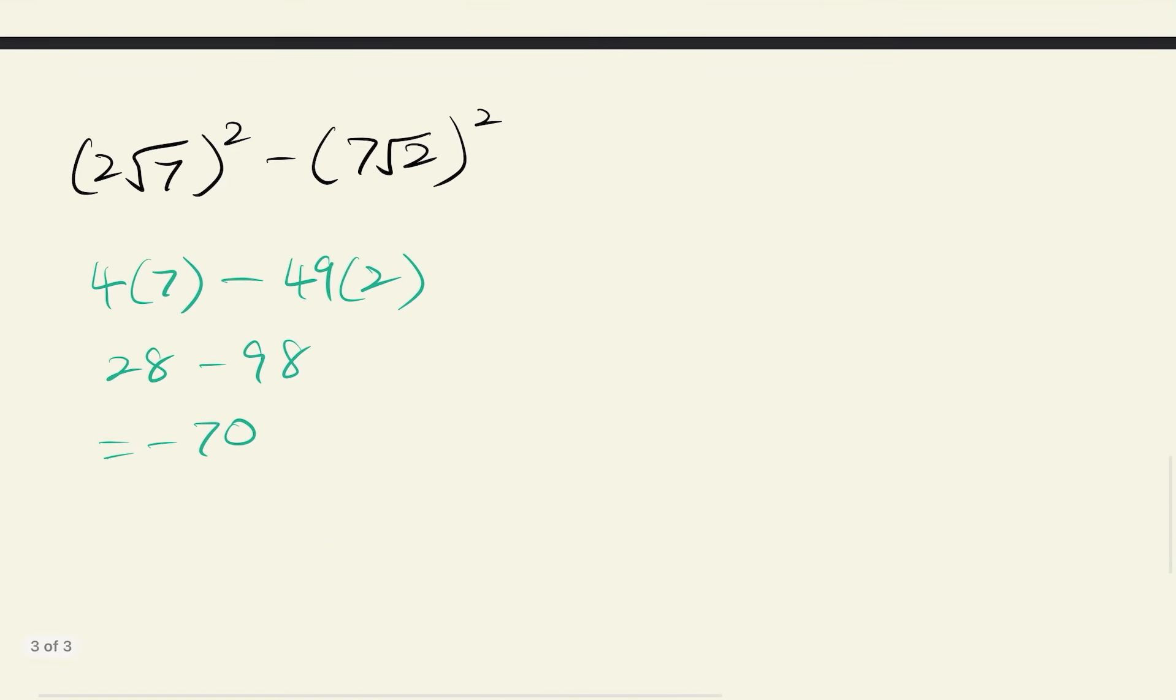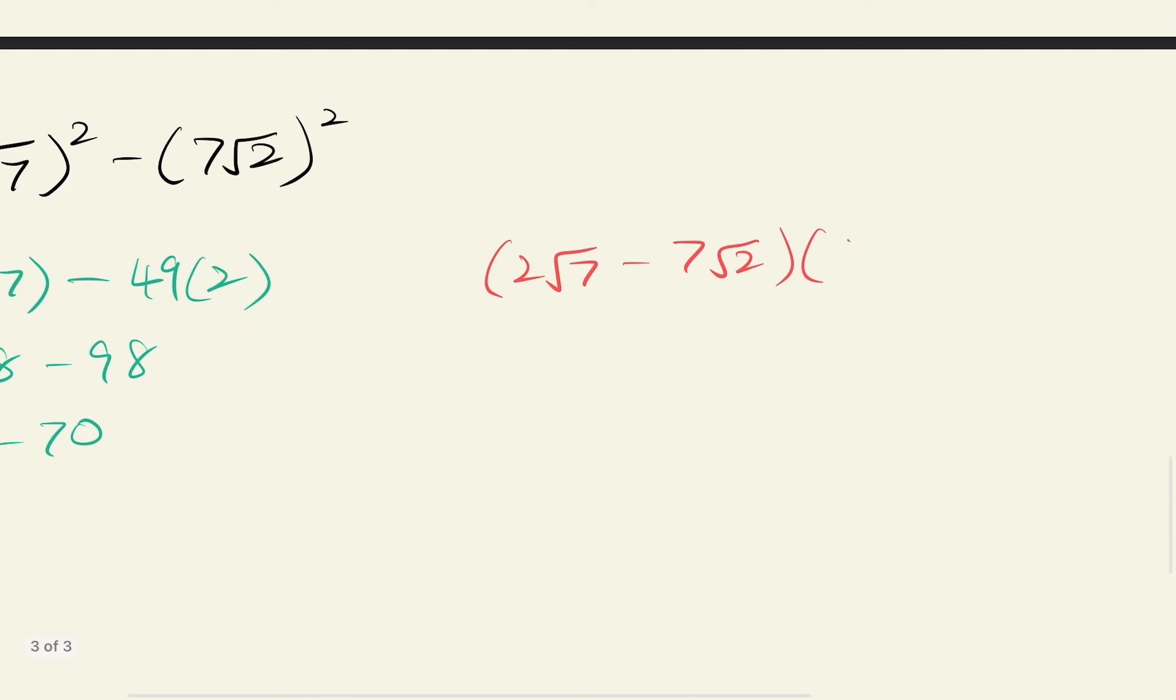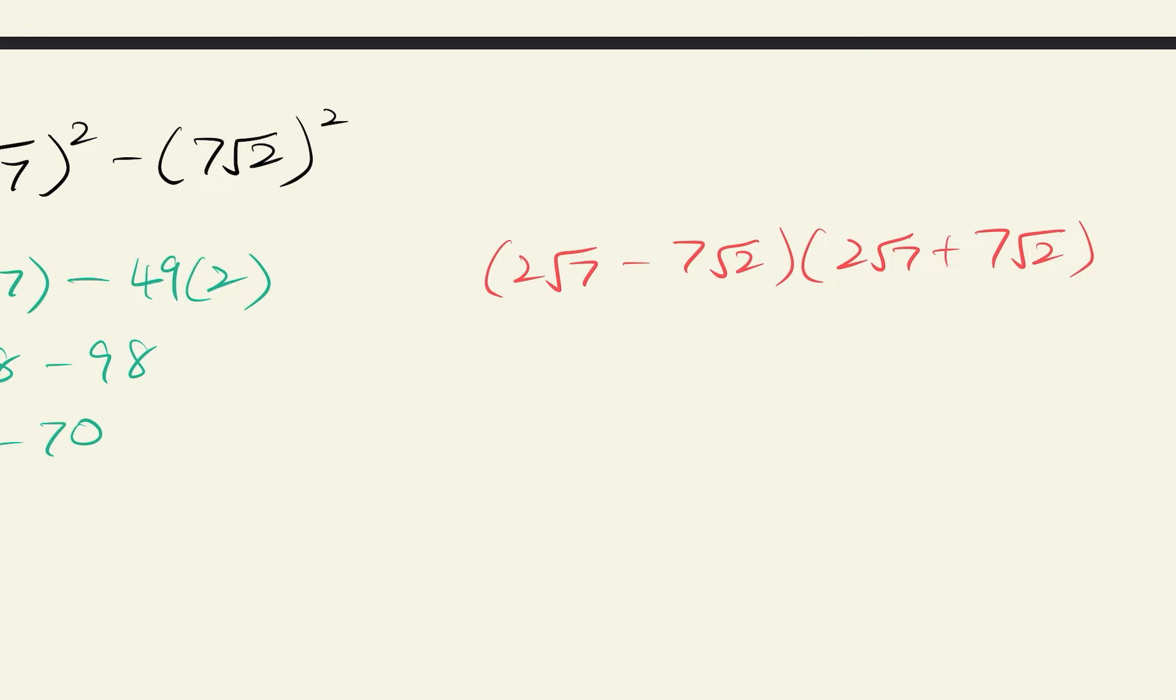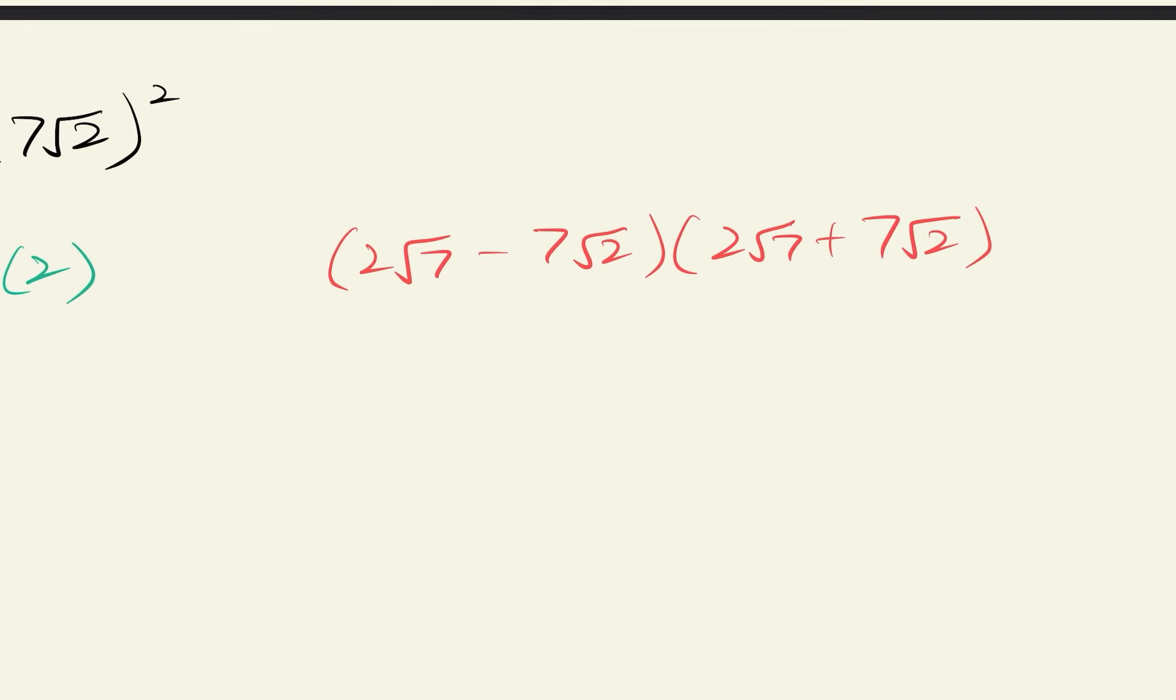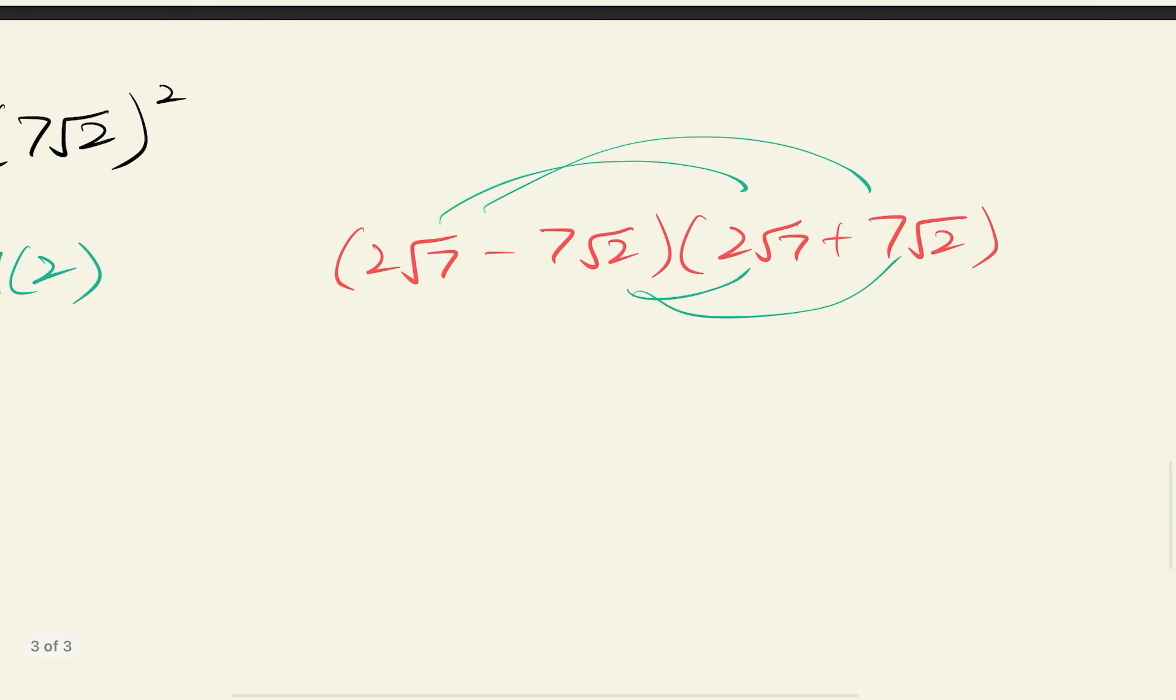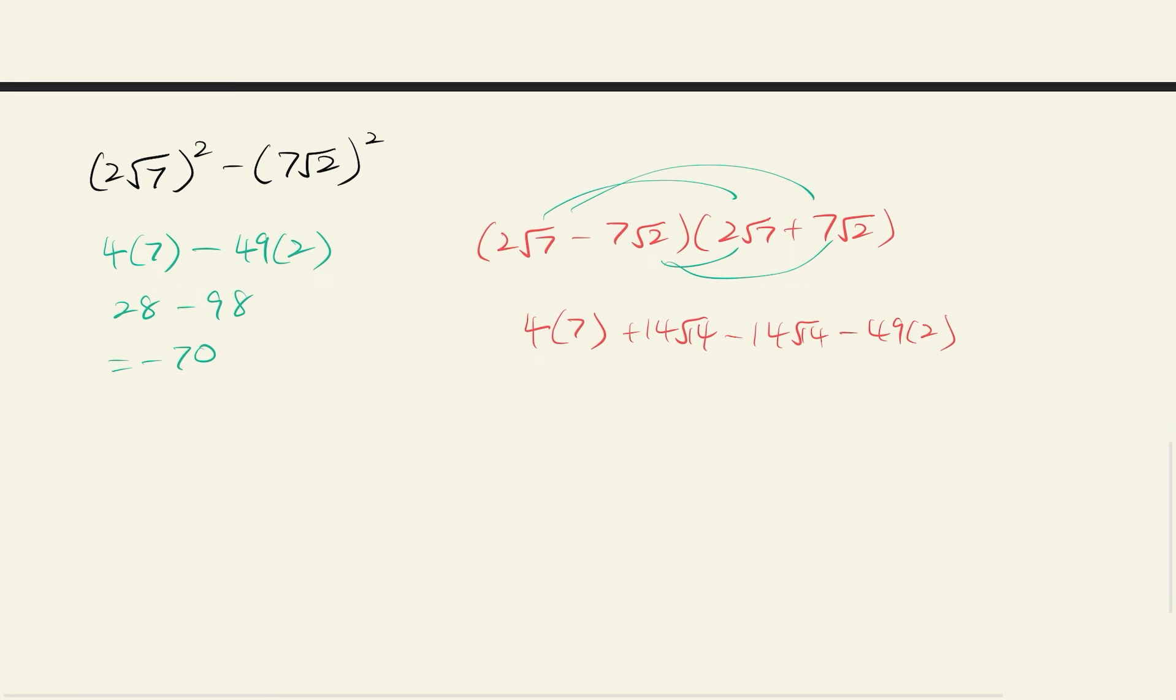So, the long-winded way I was talking about is you use the identity formula. So, same thing is two square root seven minus seven square root two. So, if you write it out, you use the formula you remember. So, you can just rainbow, rainbow again. So, what you end up getting is four times seven plus 14 square root 14 minus 14 square root 14 minus 49 times two. So, these two in the center here, they will cancel each other out. So, what you end up getting is 28 minus 98, which is the same as before negative 70.